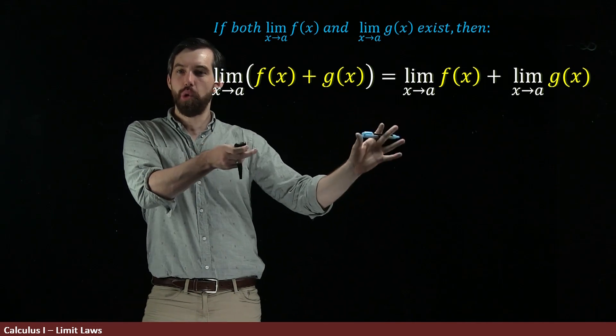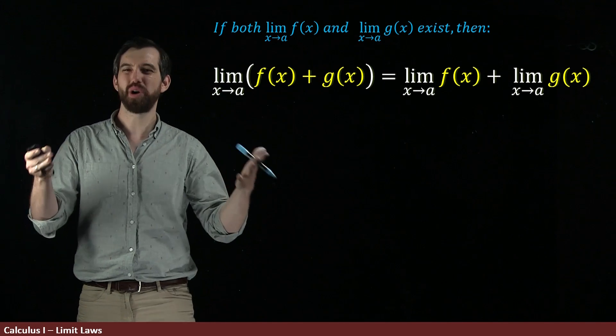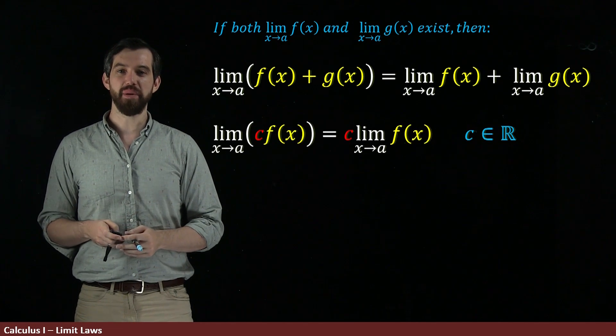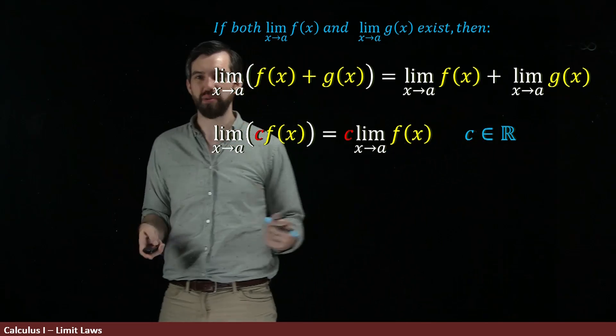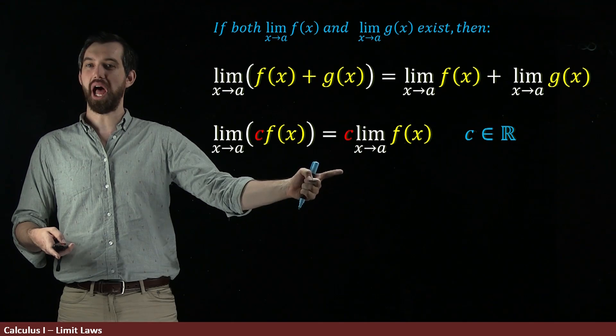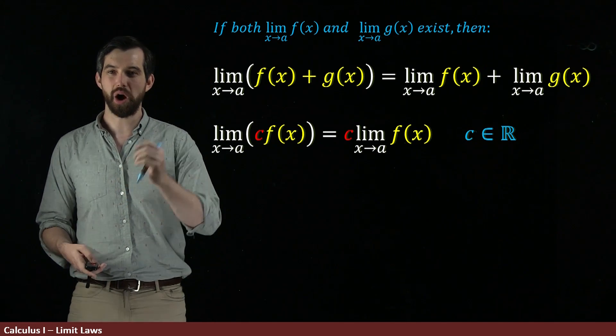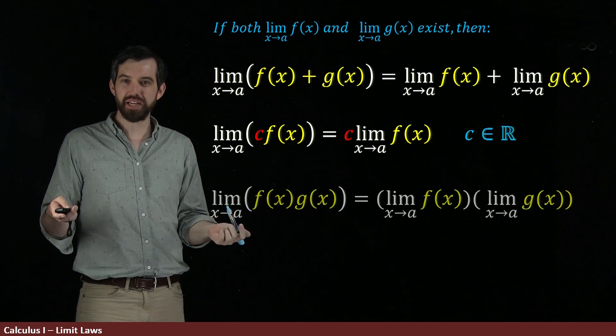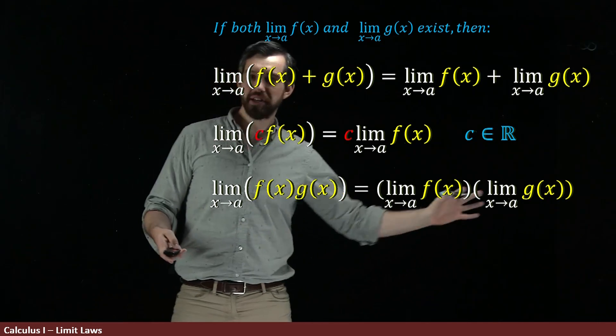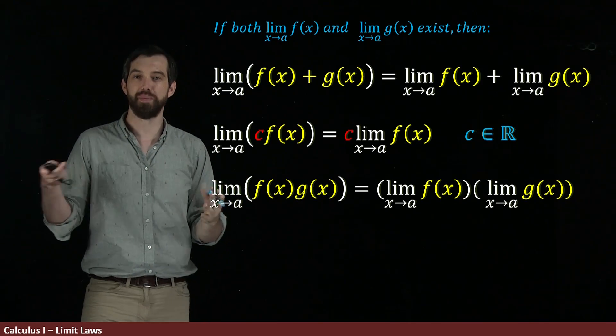So this is one of the so-called limit laws, a law that allows us to break up a more complicated limit into a simpler one. But there are many. So for example, if you have some constant, some just real number like 7, the limit of 7 times f of x is just 7 times whatever the limit was of f of x. Or we have this so-called additivity rule here. We can do the same thing with products. We could say that the limit of a product is the product of two different limits here. Again, under this initial assumption that all these individual limits exist.